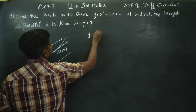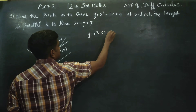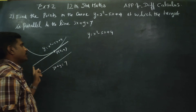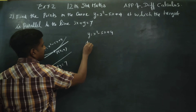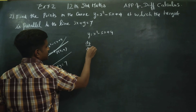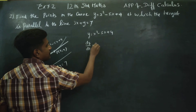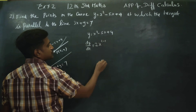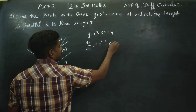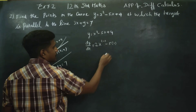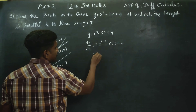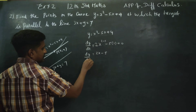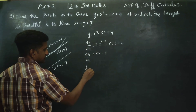y is equal to x squared minus 5x plus 4. Differentiating: dy by dx equals x squared differentiated gives 2x power 2 minus 1, minus 5 times x differentiated gives 1, and the constant differentiates to 0. So dy by dx is equal to 2x minus 5. This dy by dx is the slope.